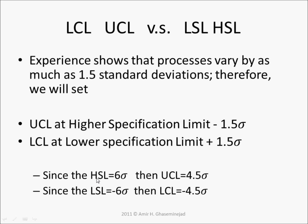Since we decided to set our higher specification limit at 6 sigma, the upper control limit should be set at 4.5 standard deviations. Since the lower specification limit is at negative 6 sigma, the lower control limit should be at negative 4.5 standard deviations.